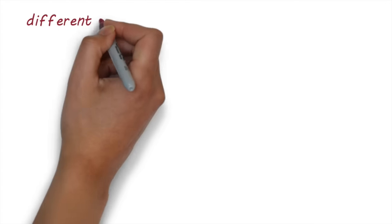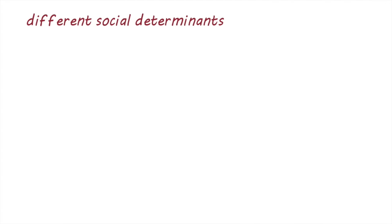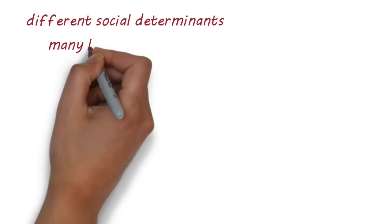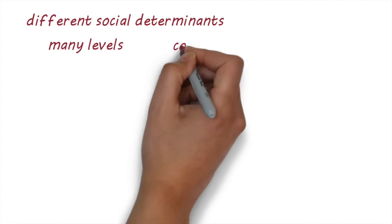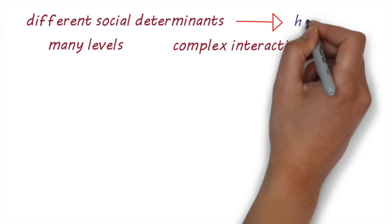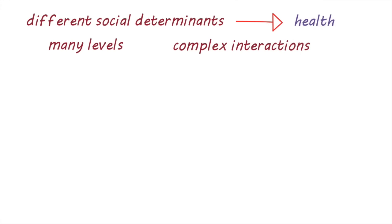Now, there are many different social determinants of health, working across many levels and with complex interactions between them. To understand and explain how these determinants influence and interact with each other to affect health and well-being, several models or frameworks have been proposed.